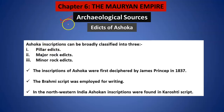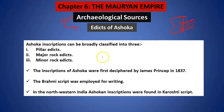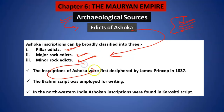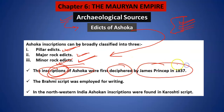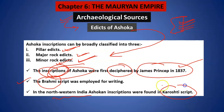So there are various literary resources available to us. Apart from those books, there are various archaeological resources also. There are various edicts — edicts means when you find a certain object which gives archaeological value, like various pillar edicts and rock edicts. Matlab, kai pillars ya rocks ke upar bhi Ashoka ne apni baat kehne ki koshish ki thi. These inscriptions of Ashoka were first deciphered by James Princep in 1837.